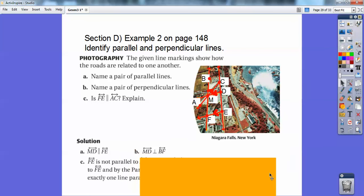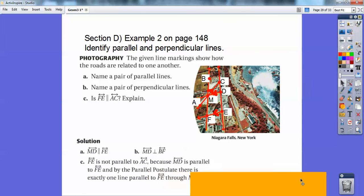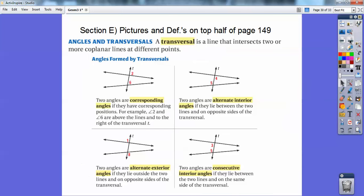And then it says, Is FE parallel to AC? No, they're not parallel, because there's only one line that goes through point M that's parallel to this line right there. And we already said that one, it was line MD. So no, it's not parallel, because MD is parallel to FE. And by the parallel postulate we just discussed, there's only one line that goes through point M that's going to be parallel.